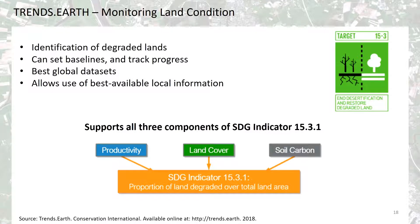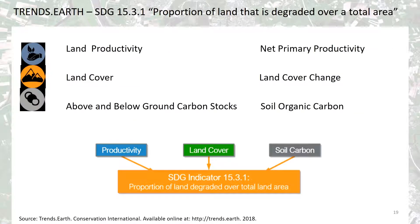Though you could use Trend Earth to monitor land conditions, Trend Earth was primarily developed to compute all three components of Sustainable Development Goal Indicator 15.3.1, following good practice guidance developed by the United Nations Convention to Combat Desertification. In order to assess the SDG indicator 15.3.1 proportion of land that is degraded over total area, Trend Earth uses information from three subindicators: land productivity, land cover, and soil organic carbon.